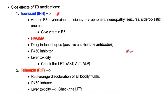Isoniazid side effects include vitamin B6 deficiency, leading to neuropathy, seizures, and sideroblastic anemia. To prevent this, whenever you give isoniazid, give vitamin B6 with it. Isoniazid can also lead to high anion gap metabolic acidosis, drug-induced lupus, and liver toxicity.